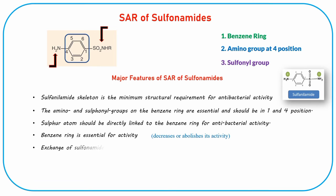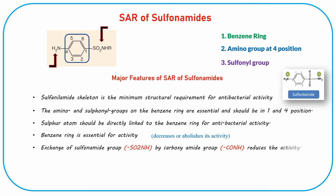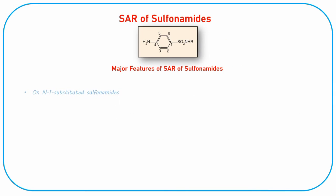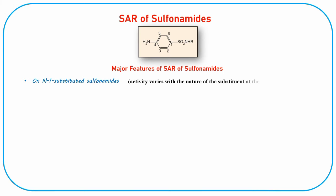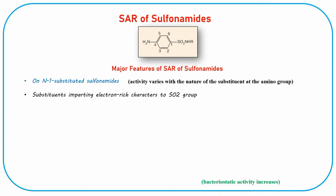Exchange of the sulfonamide group with a carboxamide group reduces the activity. Any substitutions in the benzene ring of sulfonamides produce inactive compounds. On N1-substituted sulfonamides, activity varies with the nature of the substituent at the amino group. With substituents that impart electron-rich character to the SO2 group, bacteriostatic activity increases.